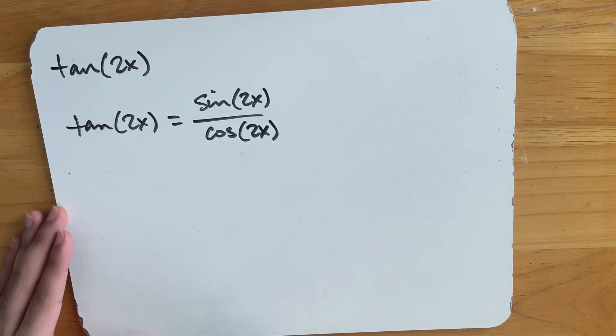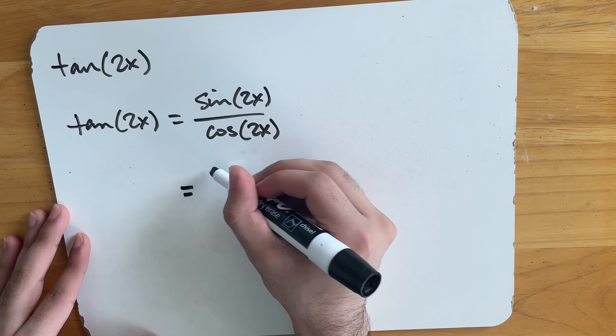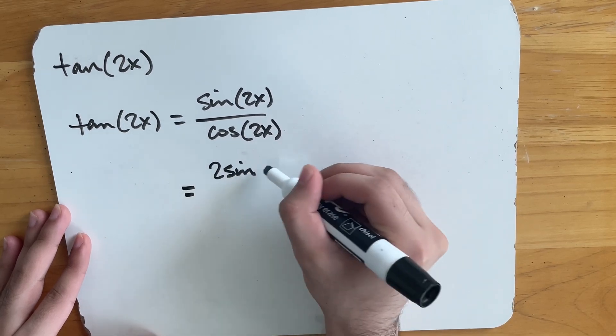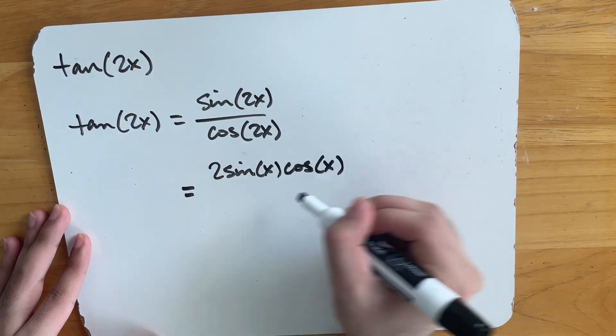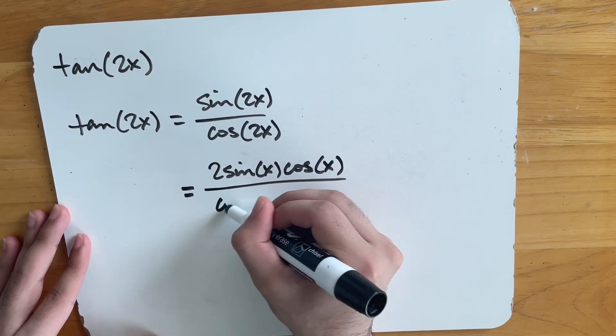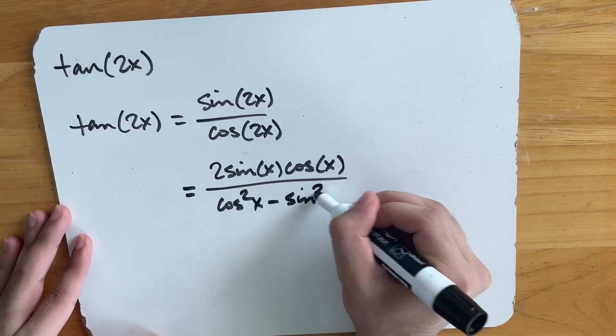And then we use the identities for both, right? Just plug them in. So we can get that tan of 2x is equal to 2 sine x cosine x over cosine squared x minus sine squared x.